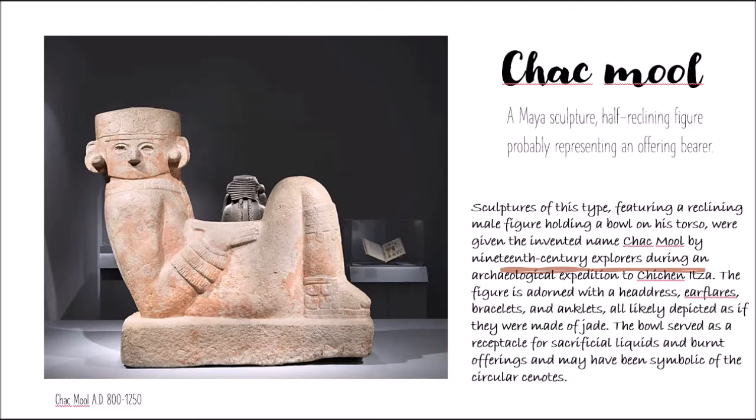The bowl, as you see in this Chakmul, served as a receptacle for sacrificial liquids, burnt offerings, and may have been symbolic of the circular cenotes.